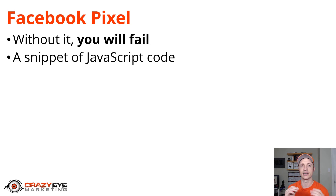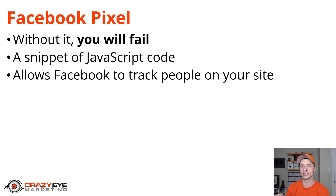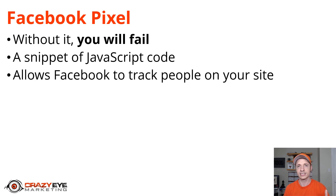All the Pixel is, is just a little snippet of JavaScript code that you put on your website, in the header area. This allows Facebook to track people on your website. Somebody clicks on your ad, and then Facebook can watch how that person engages with your website — what pages they're landing on, what they're clicking on, what they're opting in for, what they're buying. It tracks all that information and feeds it back into Facebook's algorithm for auto-optimization, retargeting, and more.